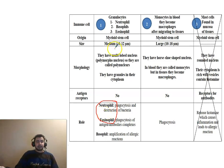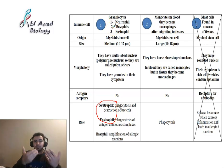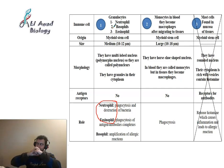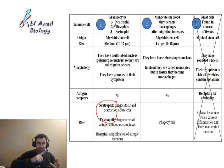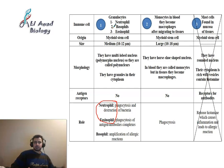Granulocytes are called non-specific immune cells. They attack randomly without depending on the intruder's identity. They attack bacteria and perform phagocytosis — not only on bacteria, but also on antigens, viruses, and immune complexes. They attack and engulf them non-specifically, without needing to recognize or bind to a specific target first.